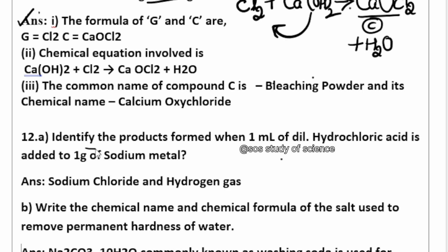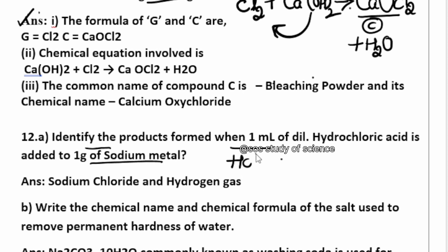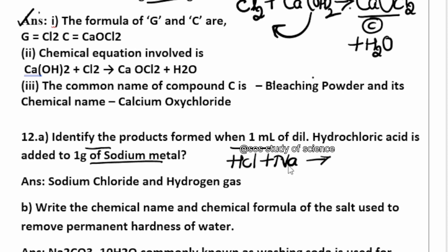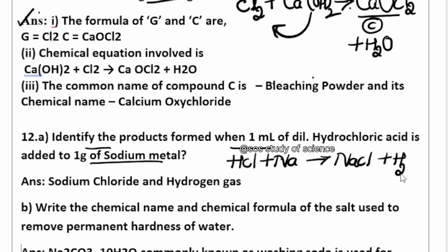Question 12: Identify the products formed when 1 ml of dilute hydrochloric acid is added to 1 gram of sodium metal. We have hydrochloric acid and sodium metal. When these two react, sodium chloride is formed along with the liberation of hydrogen gas.